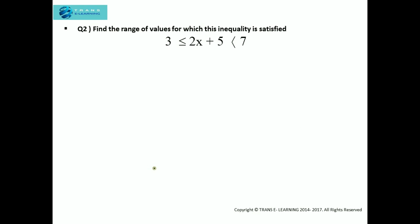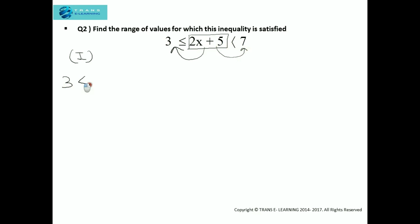The next question: find the range of values for which this inequality is satisfied — that is, 3 less than or equal to 2x plus 5 is less than 7. Here, 2x plus 5 is the middle term, so we split this compound inequality into two parts. The first part consists of the middle value and the left-hand side, and the second part consists of the middle value and the right-hand side.